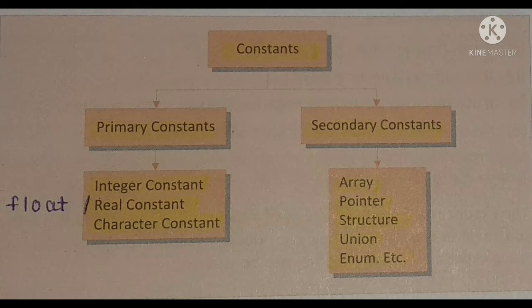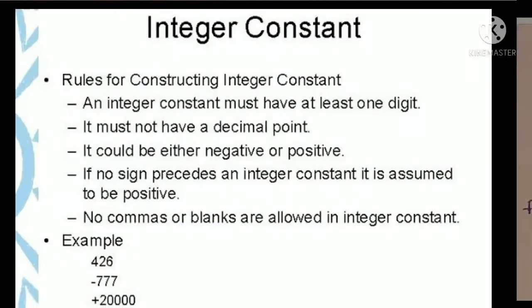Constants in C can be divided into two major categories: first is primary constants and second is secondary constants. In primary constants, integer, real, and character constants are involved. In secondary constants, array, pointers, structure, union, and enum are involved.